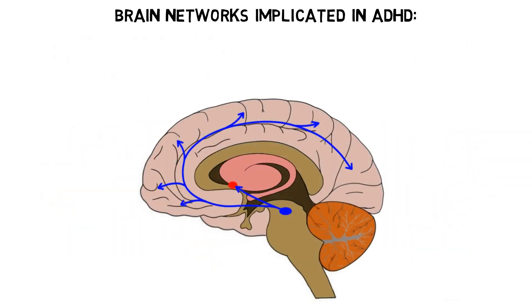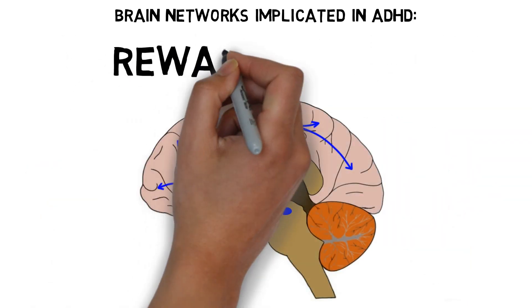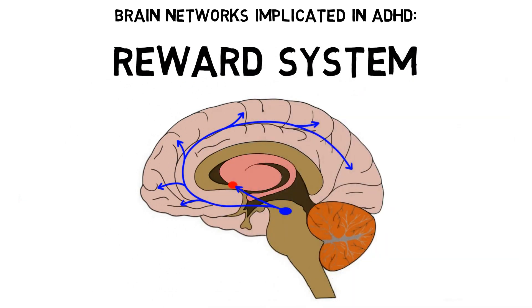Studies have also found that people with ADHD tend to display atypical activity in the reward system, a group of structures that are involved in motivated behavior, anticipation, and reinforced learning. This atypical reward system activity might be associated with a tendency to overestimate the value of short-term rewards in comparison to long-term rewards, which could also affect planning and decision-making.